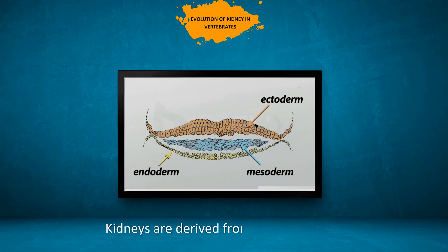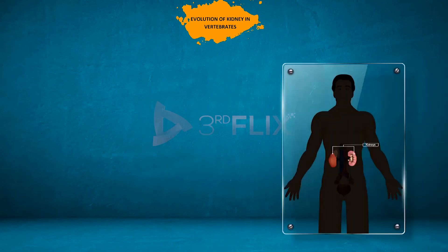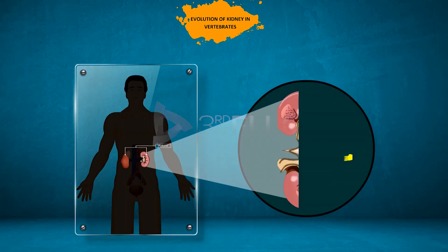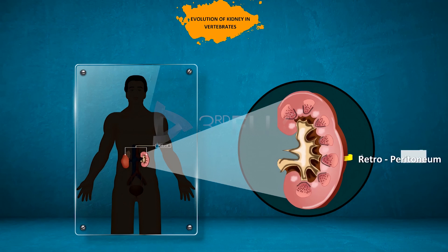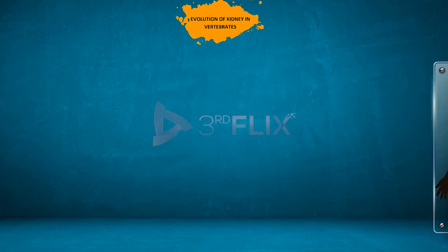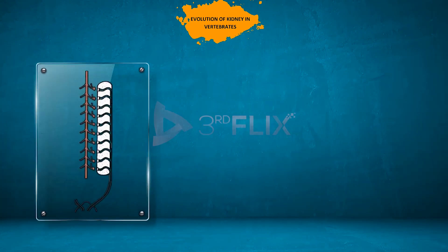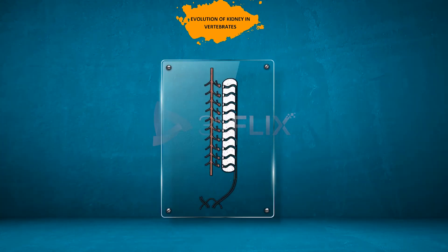Kidneys are derived from the mesoderm. Kidneys are retroperitoneal organs, which means they are covered by the parietal peritoneum, called the retroperitoneum, only on the side facing the coelom.